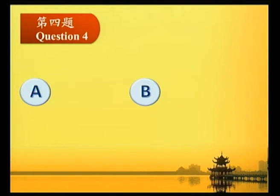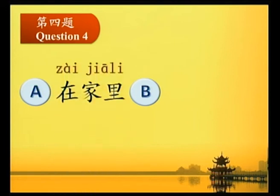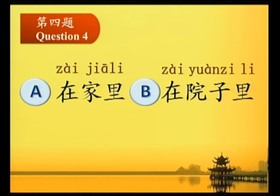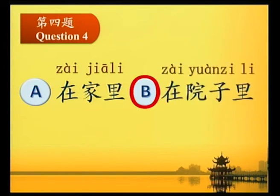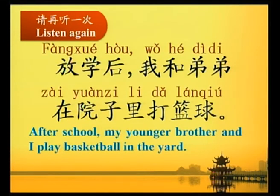第四題 (Question 4): 放學後,我和弟弟在哪兒打籃球? (After school, where do my younger brother and I play basketball?) A. 在家裡。B. 在院子裡。答案是 B. 在院子裡。Please listen again: 放學後,我和弟弟在院子裡打籃球。After school, my younger brother and I play basketball in the yard.